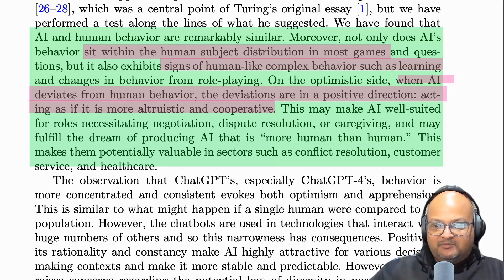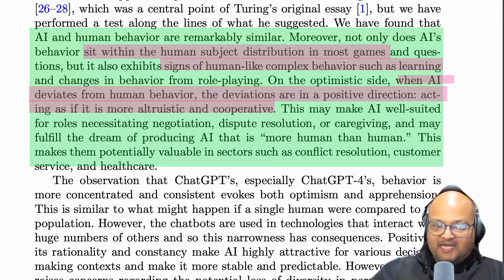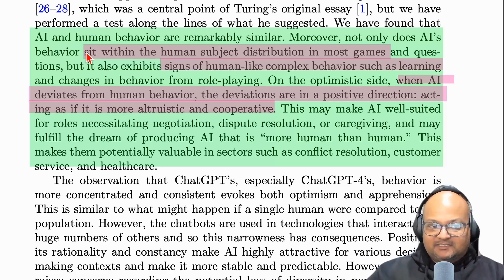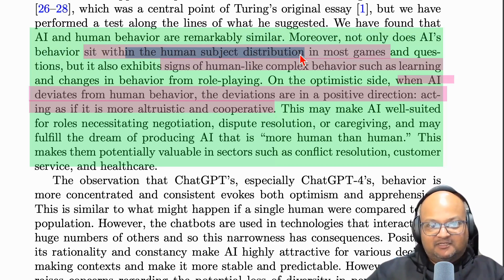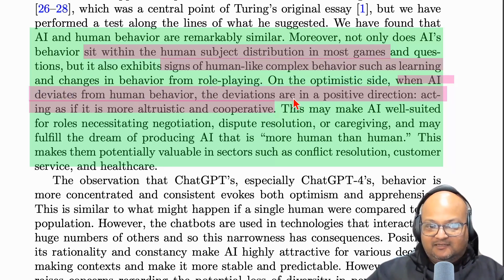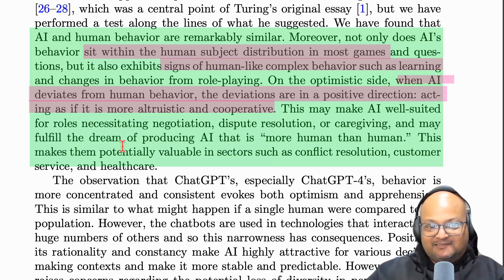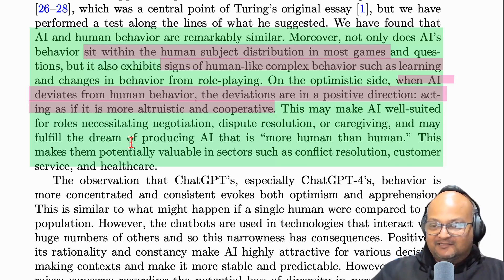That was a quick look at a paper that administers a Turing test to LLMs — and they pass, or at least GPT-4 passes. GPT-3 comes close. To be more precise, they are well within the statistical distributions that humans have on both personality traits and games like the Prisoner's Dilemma. Interestingly, when they deviate from human behavior, it's in a positive direction — the LLMs are more altruistic and more cooperative than the average human. So LLMs pass the Turing test. That should be bigger news than it is. I hope you enjoyed that — please like the video, consider subscribing, and I'll see you next time.